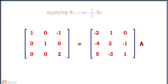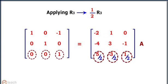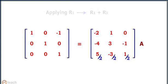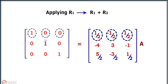Now on replacing R2 by R2 minus R3, we get the next result. Now on replacing R1 by R1 plus R3, we get the identity matrix on the left hand side.